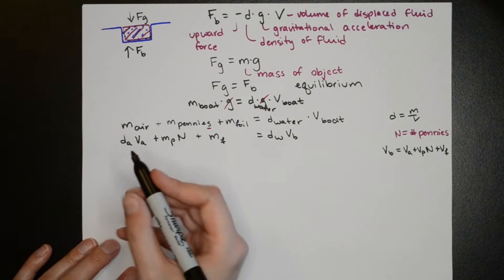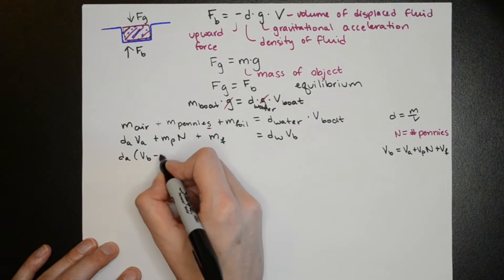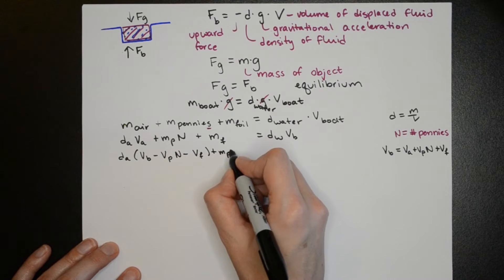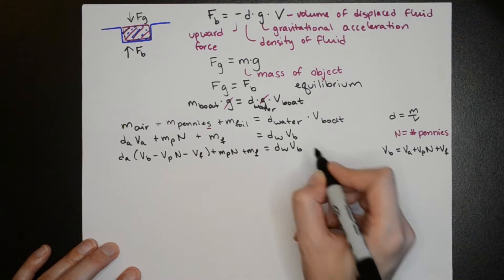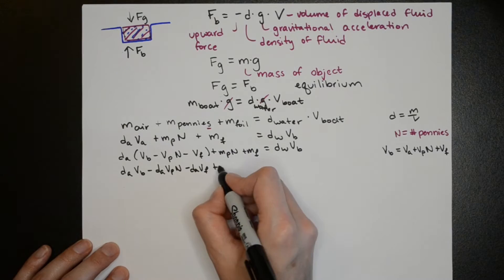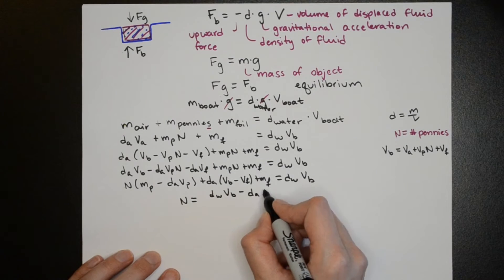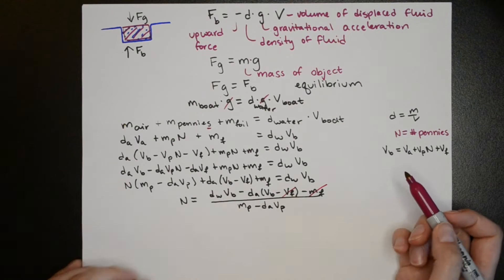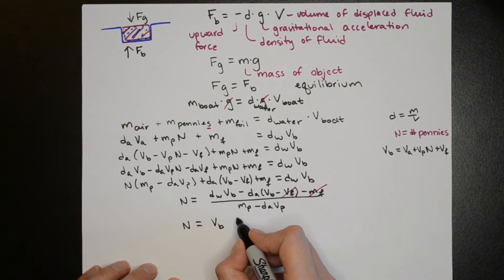We're going to use this equation to substitute in for VA which is the volume of air since that's something that's difficult to measure. So we'll keep VB in the equation but we're going to use this to eliminate VA. Now that we have the equation with the variable n we're going to solve for n since we're interested in the number of pennies in the boat. I'm going to eliminate the foil here because it's pretty small and I didn't measure it.